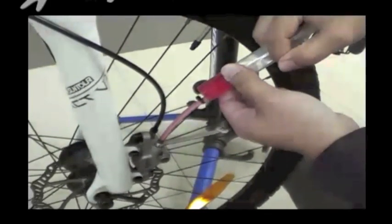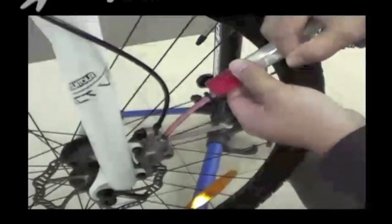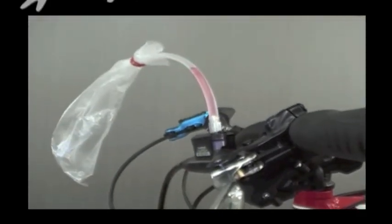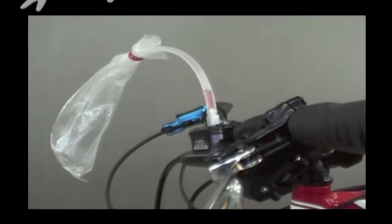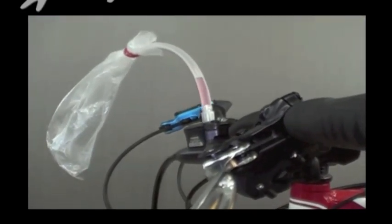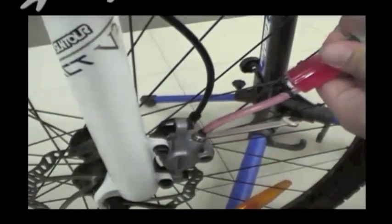Be sure to remove any air from the system prior to plunging the fluid. Push in on the cylinder to extract some oil into the upper hose and then simply pull it back through to help push bubbles out. Repeat this motion several times to clear the brake and piston of all remaining air.